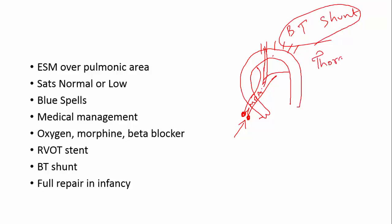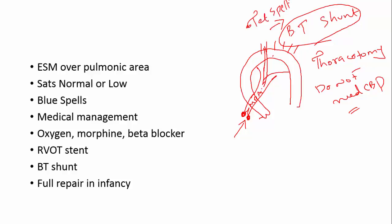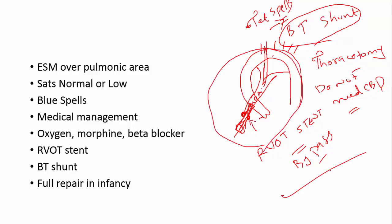The BT shunt is done through a thoracotomy. You do not need to go on bypass for this surgery, so it's less risky. This is a palliative procedure and will need full correction at a later stage — it's usually done when young infants are having TET spells. Another option is putting a stent across the RVOT to bypass the obstruction, called an RVOT stent. You can also give beta blockers — we'd normally use propranolol. If they're having a really bad spell, give oxygen, morphine, and fluid.